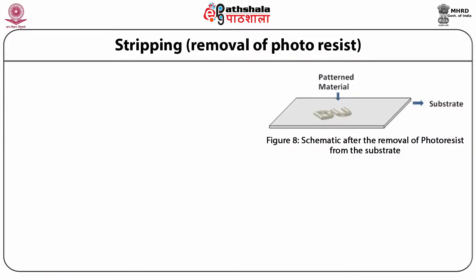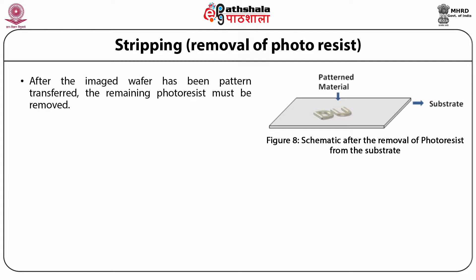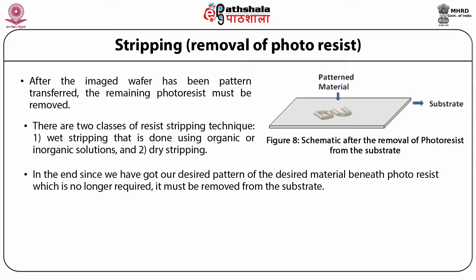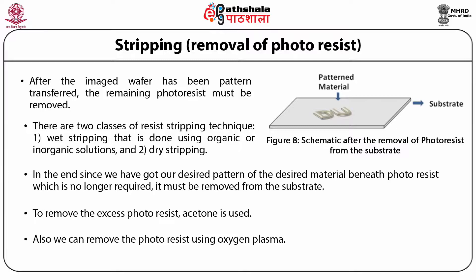The next step is stripping, which is the removal of photoresist. After the imaged wafer has been patterned and the pattern transferred, the remaining photoresist must be removed. There are two classes of resist stripping techniques: wet stripping, done using organic or inorganic solutions, and dry stripping. To remove the excess photoresist, acetone is used. We can also remove the photoresist using oxygen plasma. The figure shows the schematic after the removal of photoresist from the substrate.